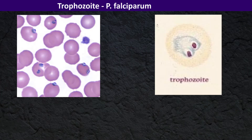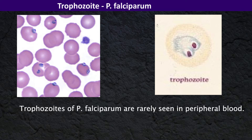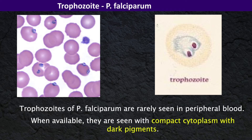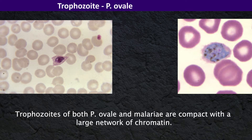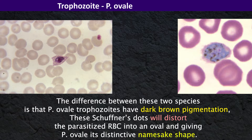Trophozoites of Plasmodium falciparum are rarely seen in peripheral blood. When available, they are seen with compact cytoplasm with dark pigments. Presence of multiple trophozoites in one cell is unique to this species. Trophozoites of both Plasmodium ovale and malariae are compact with a large network of chromatin. The difference between the two species is that Plasmodium ovale trophozoites have dark brown pigmentation, and this distorts the parasite's red blood cells into an oval shape, giving Plasmodium ovale its distinctive namesake shape.